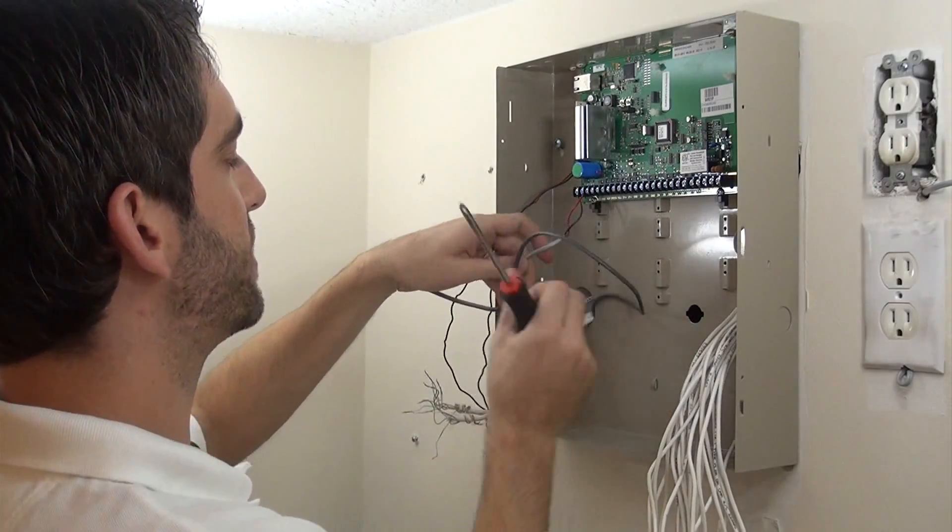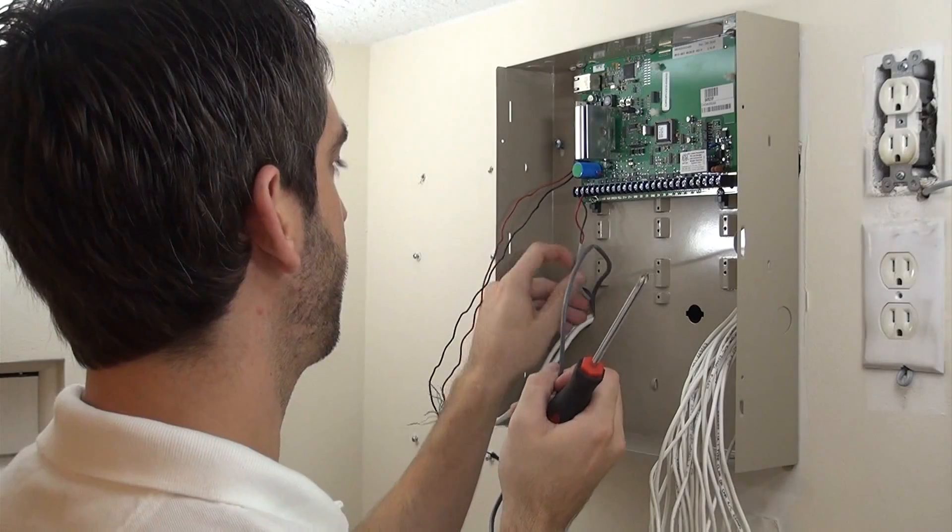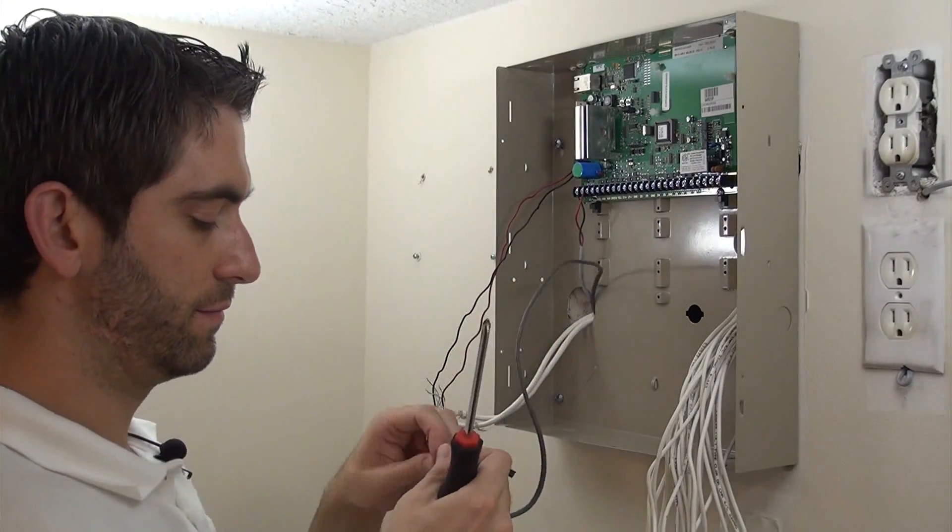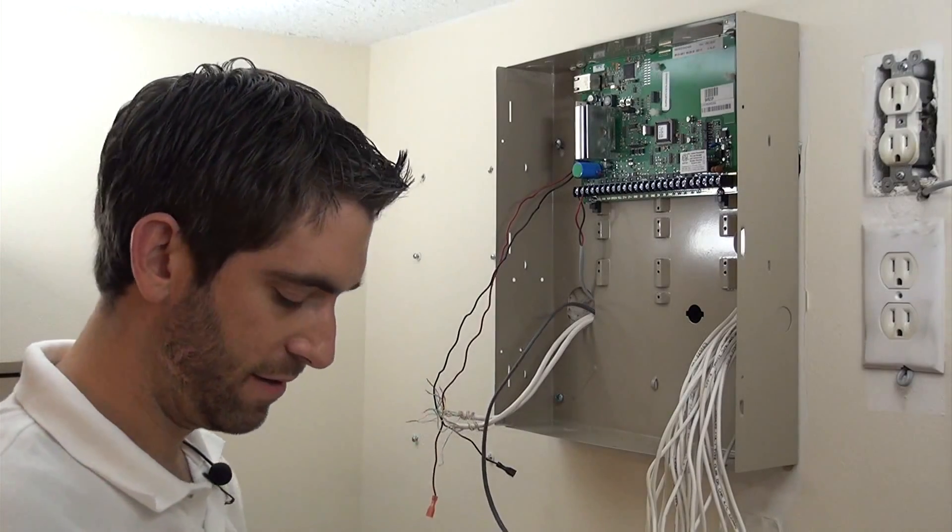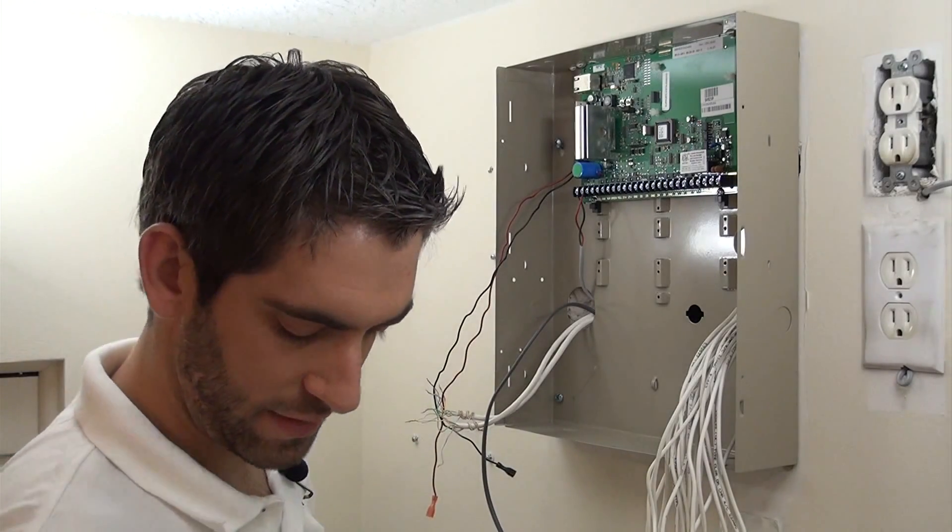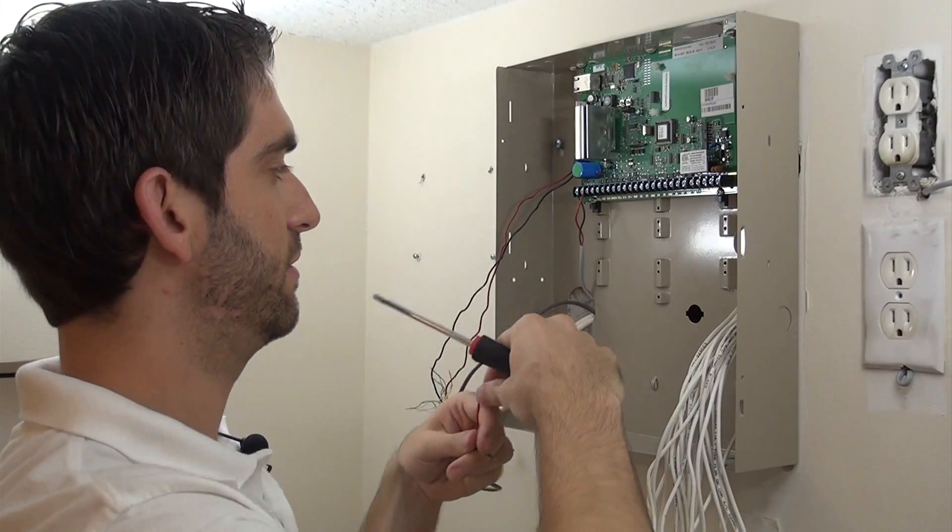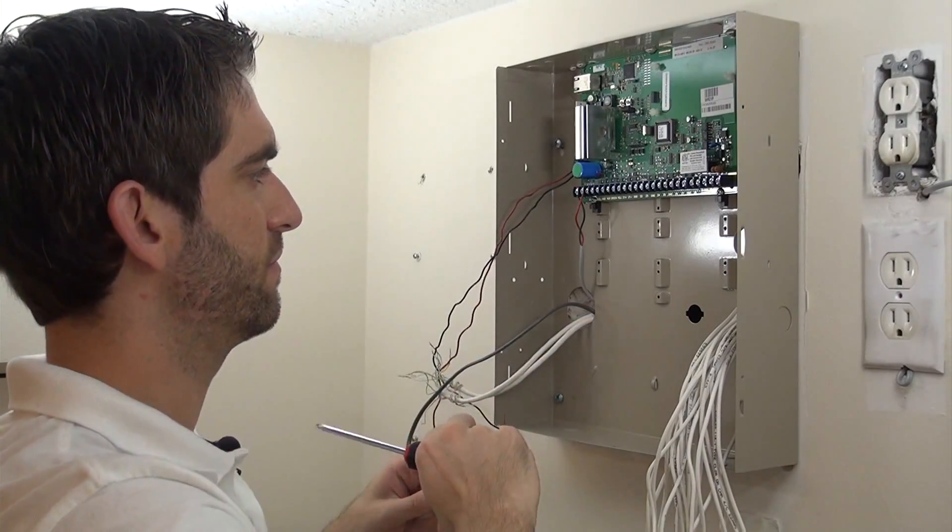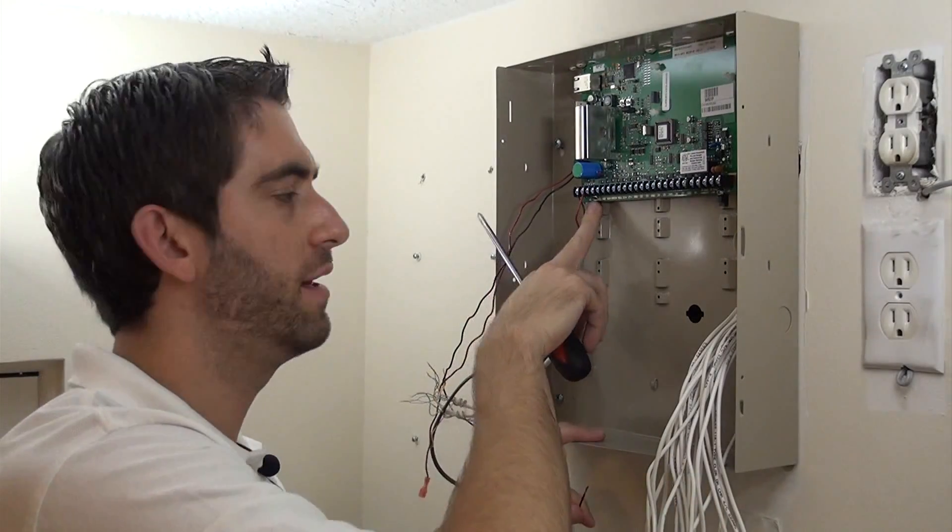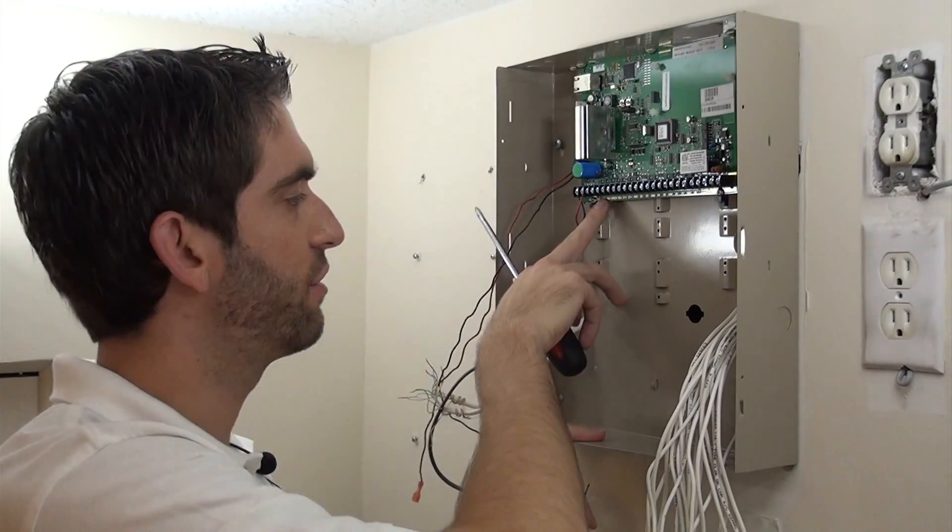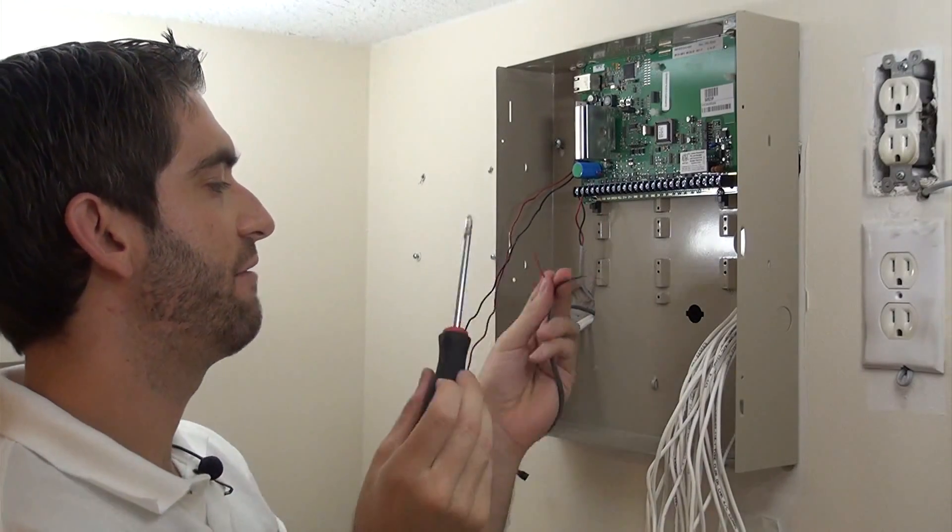Next one we're going to connect is our siren wire. For our siren, we also have black and red. This time polarity does matter though. Twist our ends. And so we've got terminal screw three is bell, four is ground. Ground is our negative power terminal, and this bell is our positive siren output.